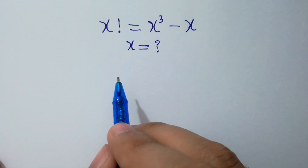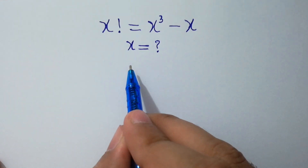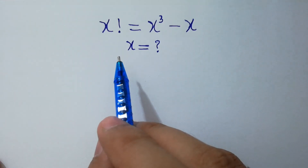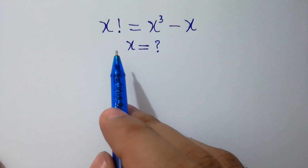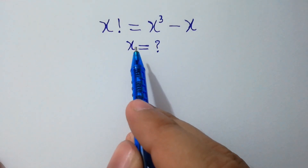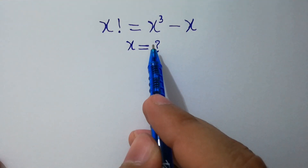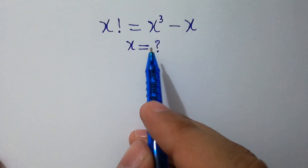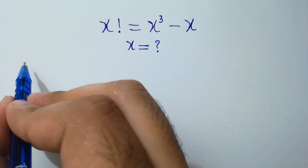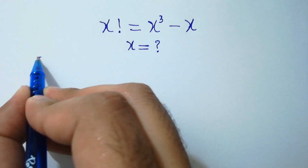Hello friends. Find the value of x if x factorial equals x cubed minus x. Let's solve it.